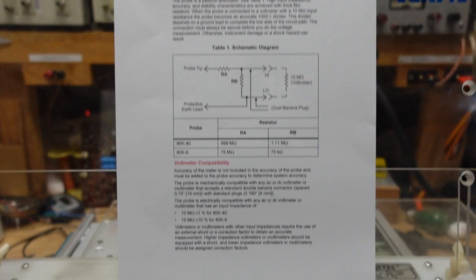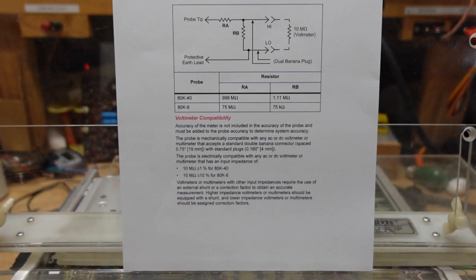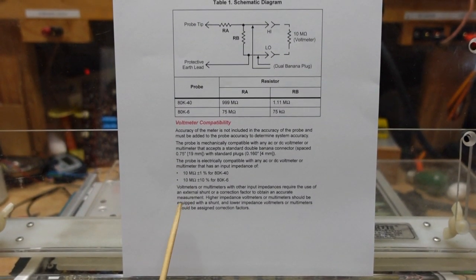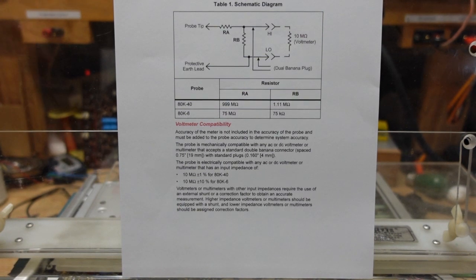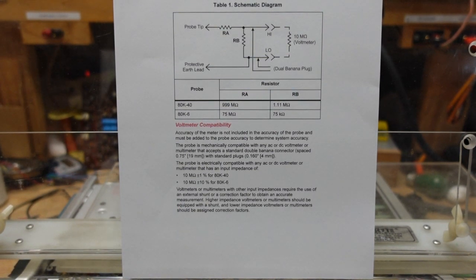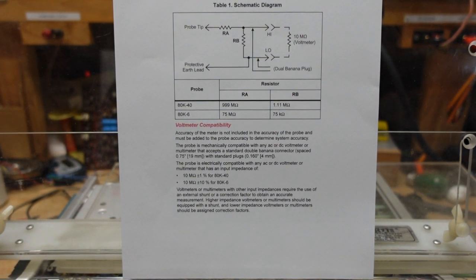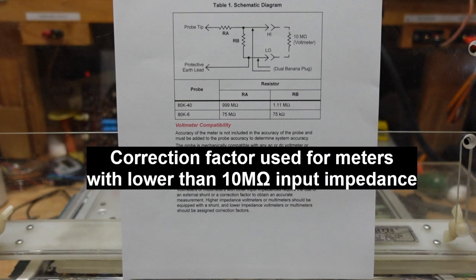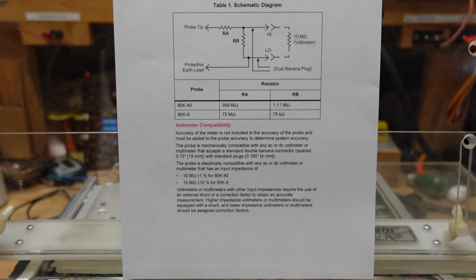If you have a meter that has other impedances, it tells you here at the bottom you use either an external shunt if it's higher than 10 megohm or you need to use a correction factor. Fortunately, as I've said several times, most digital multimeters have an input impedance of 10 megohm.